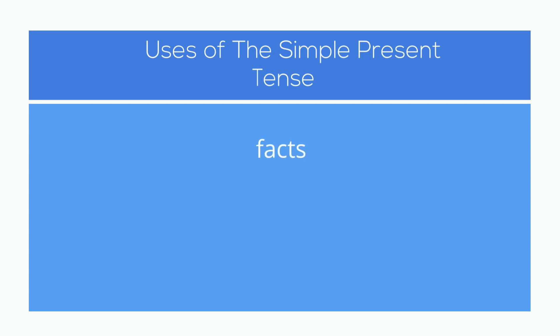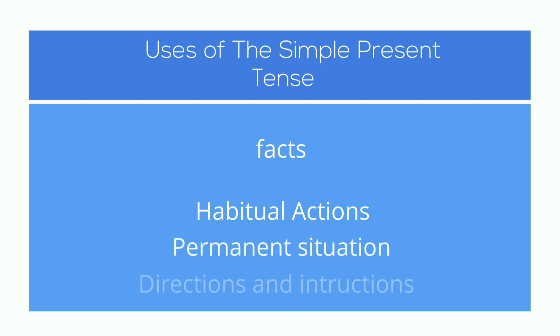We use the simple present tense to talk about facts, to talk about actions that happen regularly, to describe a permanent situation, to give directions and instructions, and also to talk about something that is fixed in the future.